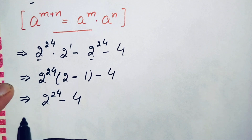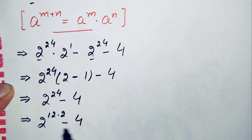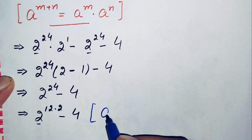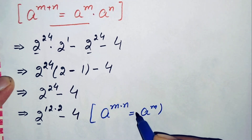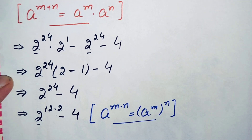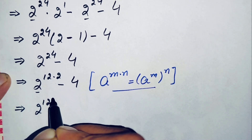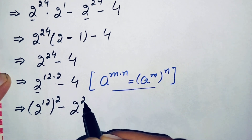Next, we can write 2 raised to power 24 as (2 raised to power 12) squared, using the exponential property that a raised to power m times n equals a raised to power m, raised to power n. So this equation becomes 2 raised to power 12, raised to power 2, minus 2 raised to power 2.